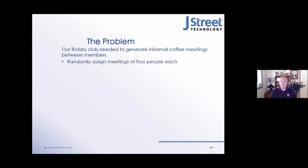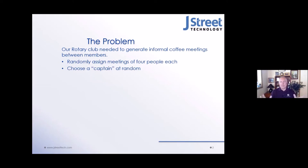The idea was to randomly assign meetings — build meetings of four people, with some interesting criteria. The system had to be able to choose a captain at random. The captain is just one of the four people who will wrangle the others to say, let's meet at this coffee shop at this time — basically to have somebody be in charge, because if you give four people the direction to go have a meeting, nobody will take charge of it.